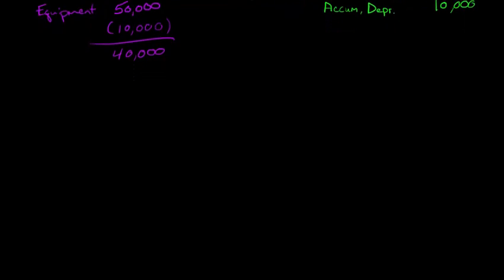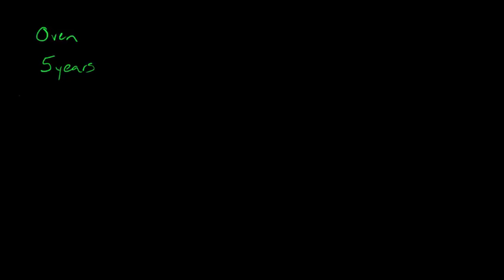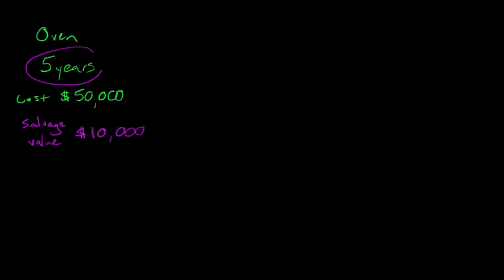That's going to change what our depreciation amount will be. We've got our oven — it's going to last five years, that's our useful life, and the cost is $50,000. But now we have salvage value. Salvage value means this is what we estimate that this machine will be worth at the end of the five years — if you were to junk this machine or sell it, that remaining value is the salvage value. We have to do a little change in our calculations.